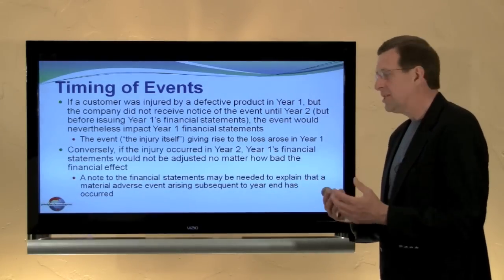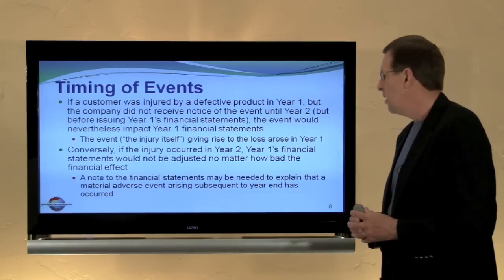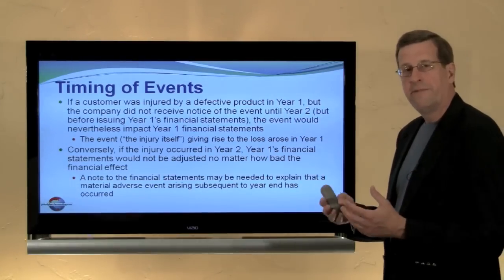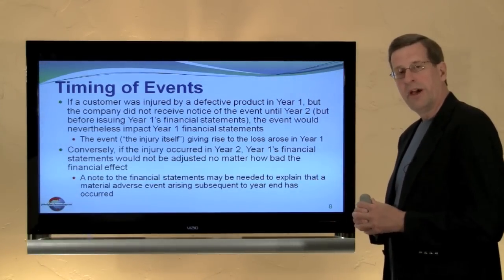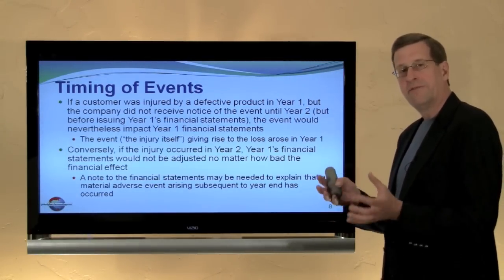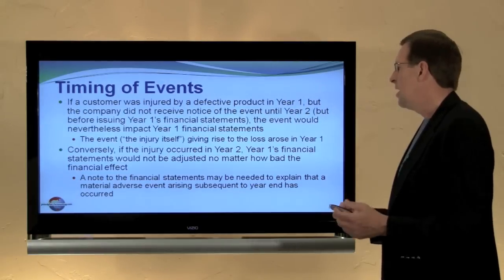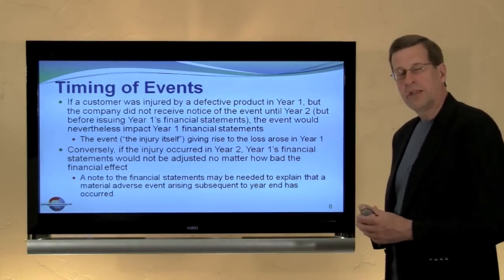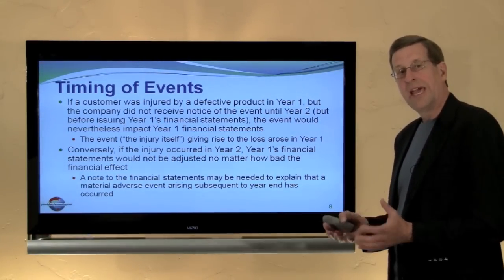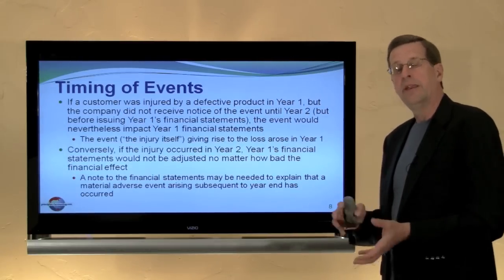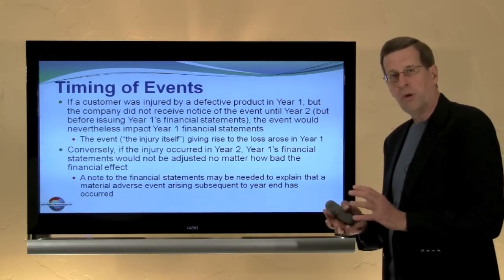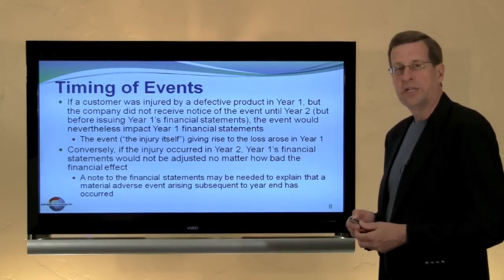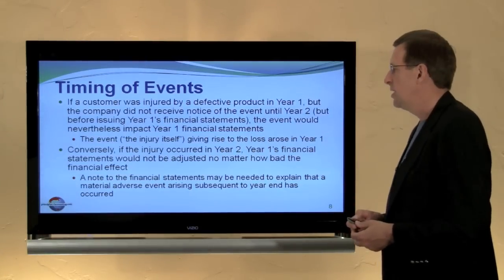If we flip this around — the injury occurred in year two — even though it might be very material and adverse, year one's financial statements are not affected because the event giving rise to the loss did not occur until year two. We might have a note to the financial statements saying that subsequent to year end this issue arose and we'll have a potential future cost associated with it, but we would not adjust the financial statements.